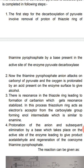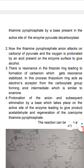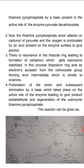In the third step, there is resonance in the thiazol ring leading to the formation of a carbonyl, which becomes resonance-stabilized. In this process, the thiazol ring acts as an electron acceptor from the carboxylate group, forming an enol intermediate similar to an enamine. Then, protonation of the anion and subsequent elimination by a base at the active site of the enzyme leads to the product acetaldehyde and regeneration of the coenzyme thiamine pyrophosphate.